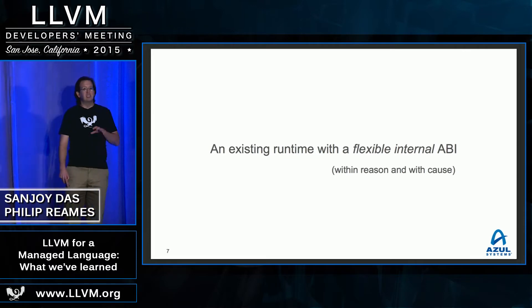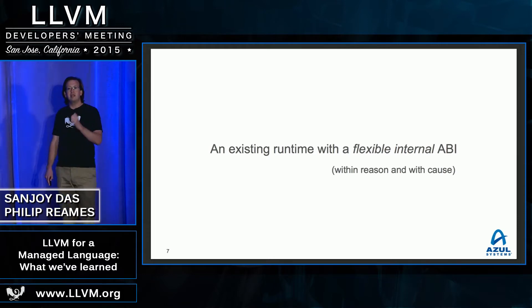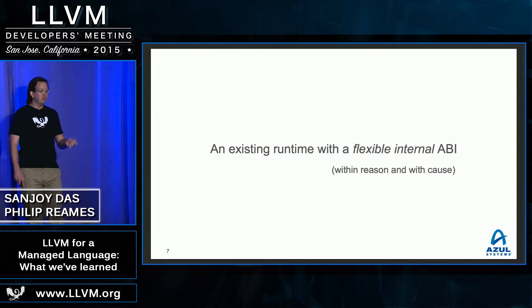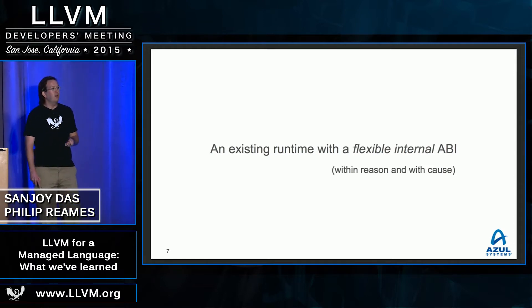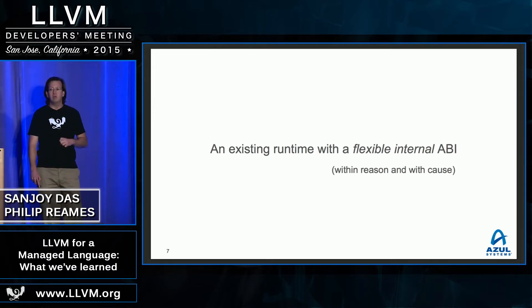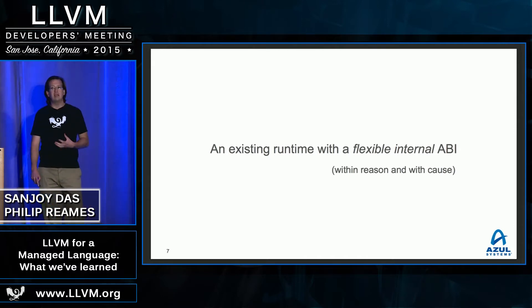One of the things I want to emphasize that turned out to be surprisingly important is that we have a runtime where we control the entire ABI. There are times where it has been convenient to tweak the runtime rather than tweak the compiler. A great example is we had a runtime stub with a very weird calling convention, and we were able to just introduce a new stub with a much simpler calling convention, rather than teaching LLVM an entirely new way of doing calls.